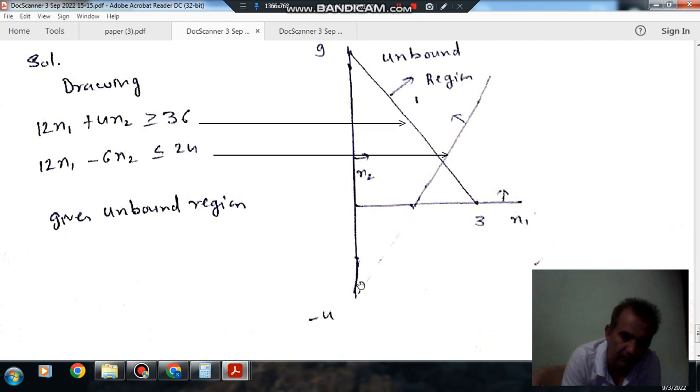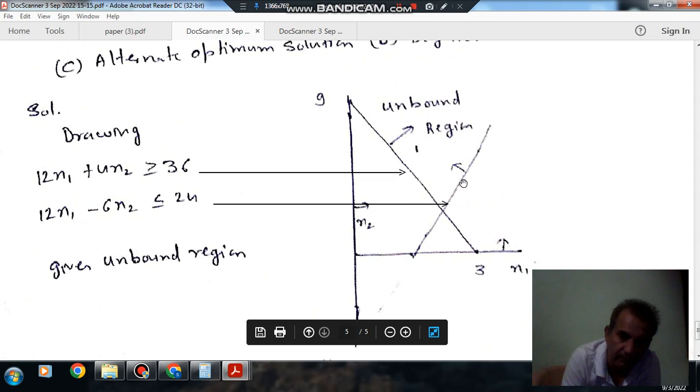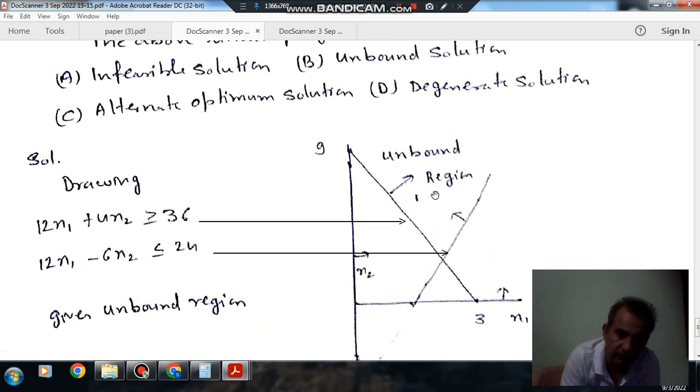So its feasible region will be like this. And it is unbound. But this is a common region which satisfies both constraints.